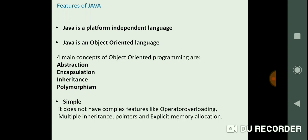The third feature of Java is it is a simple language. Java does not have complex features like operator overloading, multiple inheritance, pointers and explicit memory allocation, so it is considered to be a simple language.